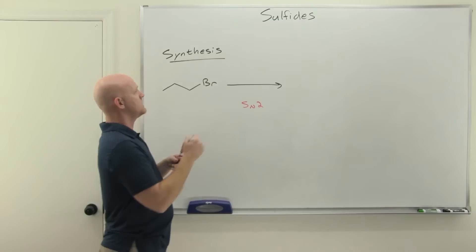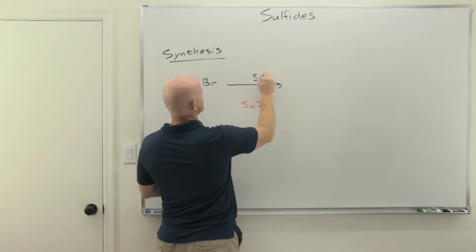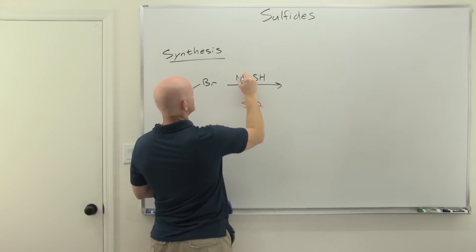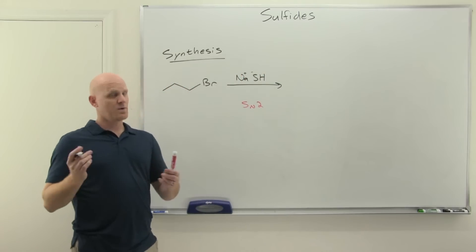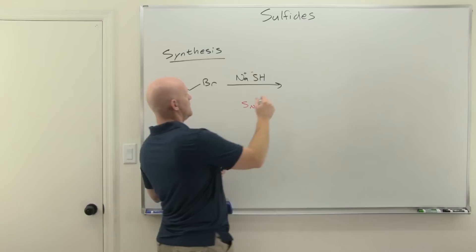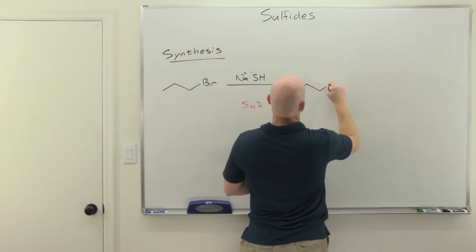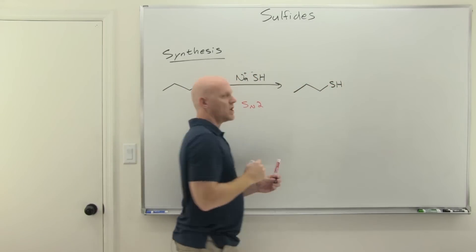And with the thiol, we wanted to use an SH nucleophile. So we used something like sodium sulfide. That way we'd have a sulfur with a negative charge. Again, one of the strongest nucleophiles we know, maybe the strongest. And in this case, you'd end up with that thiol.